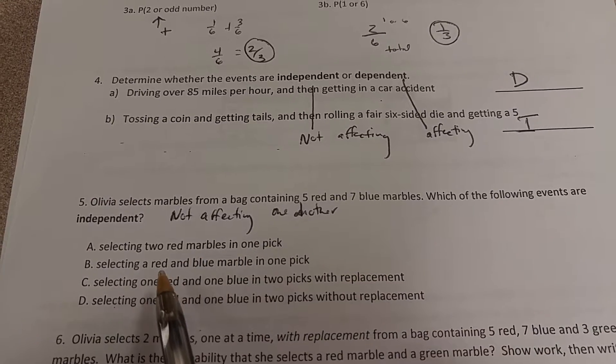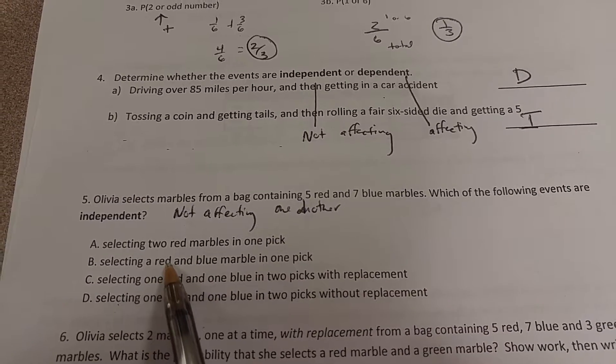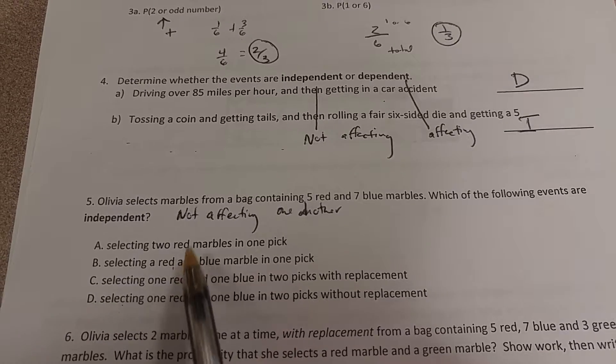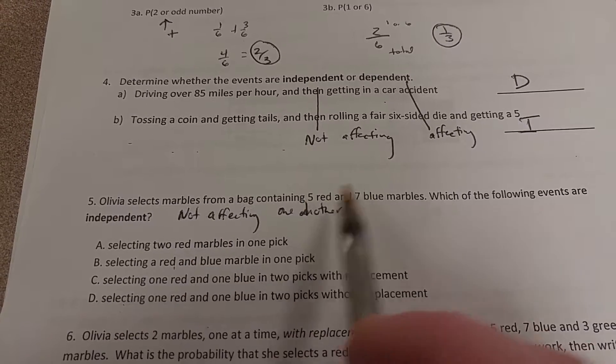So same for letter B. These two are basically the same kinds of probabilities. They just have different numbers because of the number of red and blue.